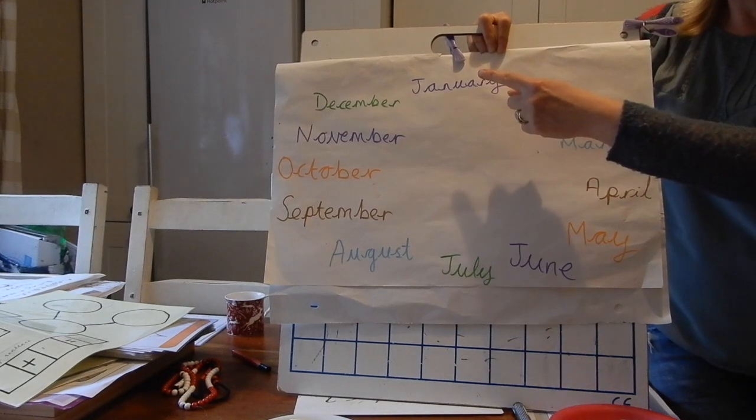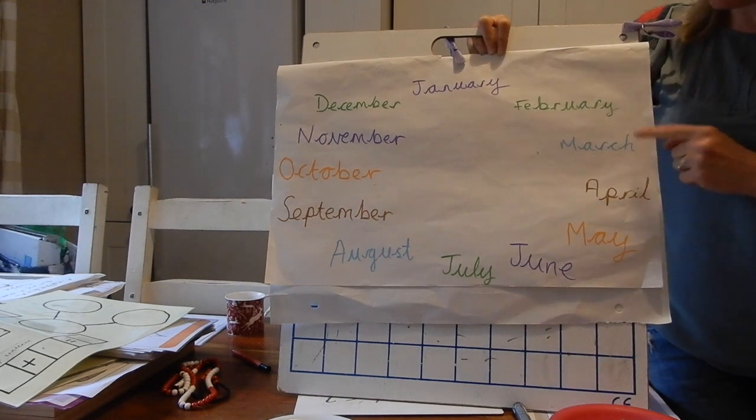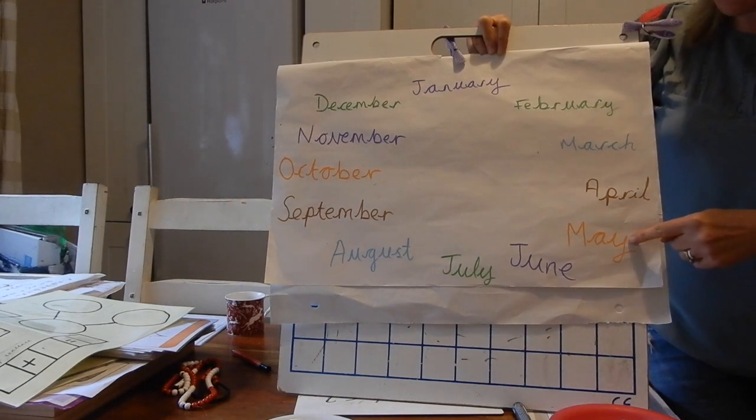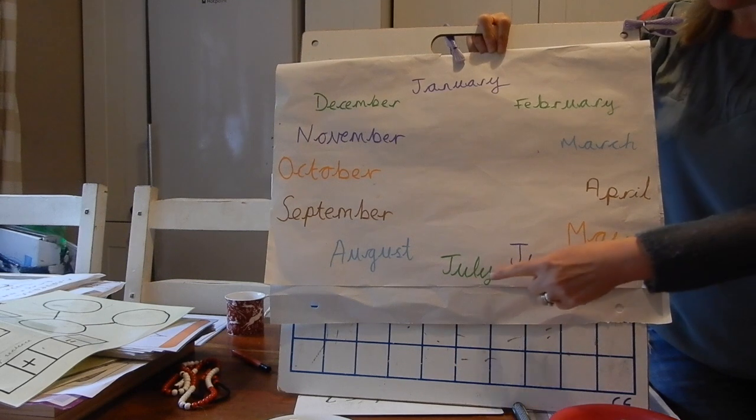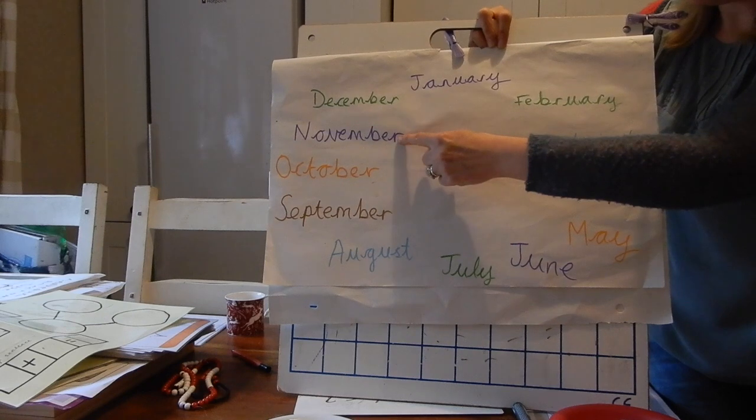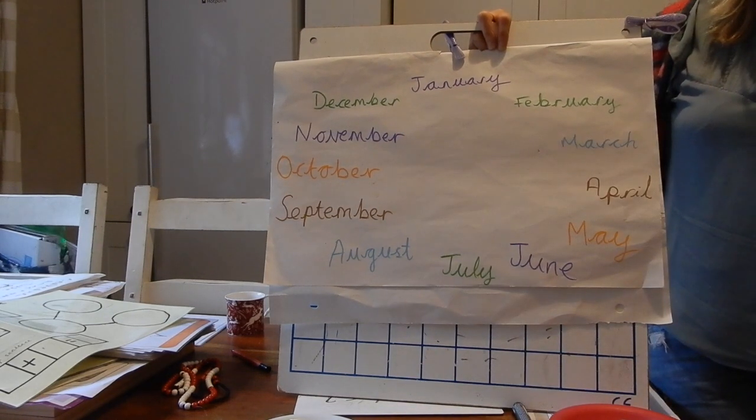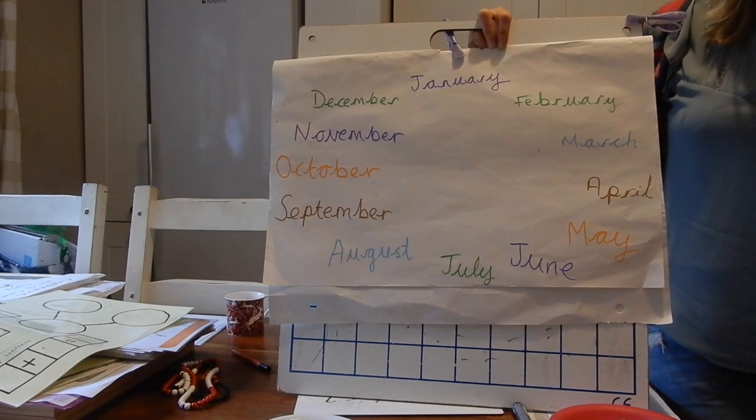So, we have, there's January, February, March and April, May, June, July and August, September, October, November, December. These are the months of the year. Well done.